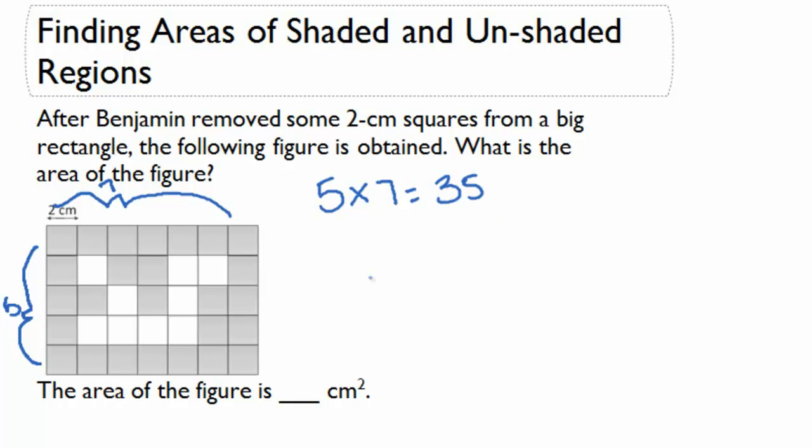Now let's see how many he took away. He took away 1, 2, 3, 4, 5, 6, 7, 8, 9. So if we take our 35 and we subtract 9, we know that we now have 26 squares left.